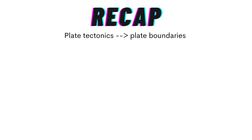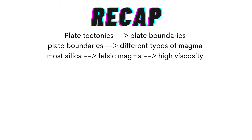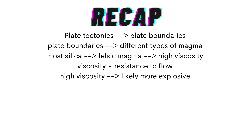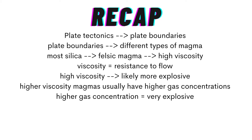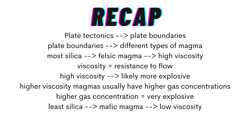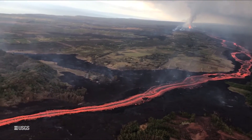Here's a little recap of the video. Plate tectonics is responsible for creating different types of plate boundaries. These plate boundaries form different circumstances under which magma forms, and there are different types of magma dependent on those boundaries. The type of magma with the most silica is felsic magma. When magma has more silica, it becomes more viscous — and remember, viscosity is resistance to flow. Something with higher viscosity ends up being more explosive, and those highly viscous magmas also tend to have higher gas content, making them even more explosive. Mafic magma has less silica and tends to be much less viscous, flowing more easily — this is where we see effusive eruptions like the one from Kilauea in Hawaii.